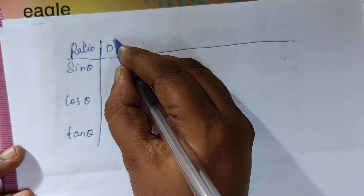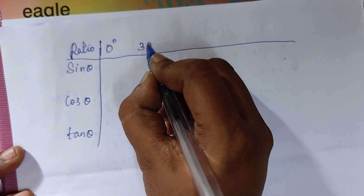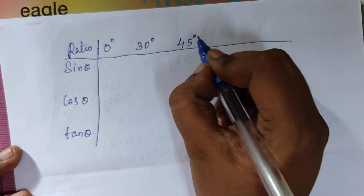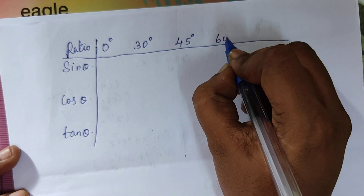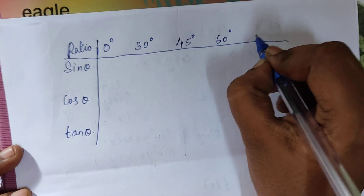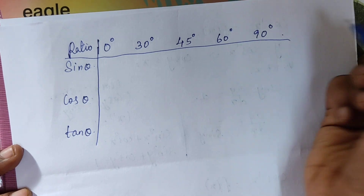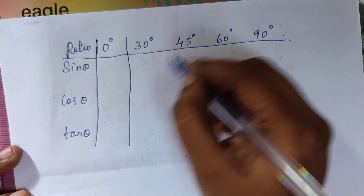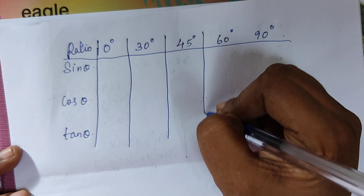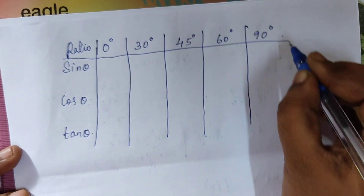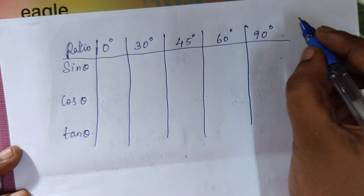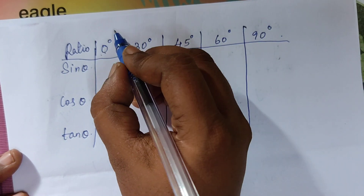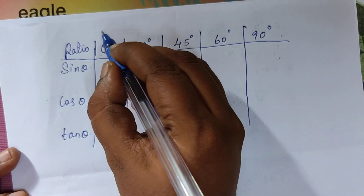We will now set up the table. The ratio column will have the angles: zero degrees, then 30 degrees, 45 degrees, 60 degrees, and finally 90 degrees.